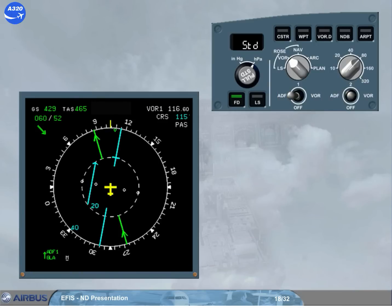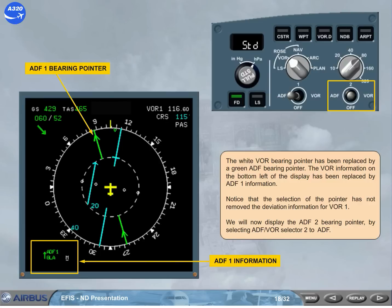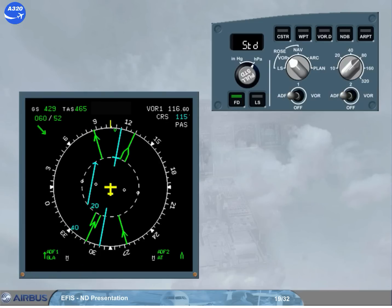The white VOR bearing pointer has been replaced by a green ADF bearing pointer. The VOR information on the bottom left of the display has been replaced by ADF1 information. Notice that the selection of the pointer has not removed the deviation information for VOR1. We will now display the ADF2 bearing pointer by selecting ADF VOR selector 2 to ADF. The ADF2 bearing pointer is now displayed represented by a double lined arrow. At the bottom of the display, there is information on the selected NAVAIDs.